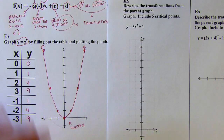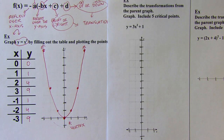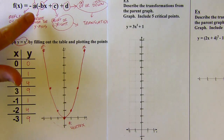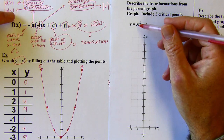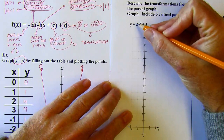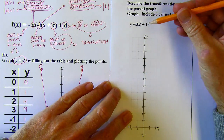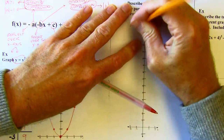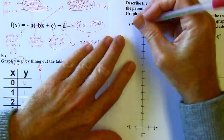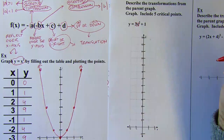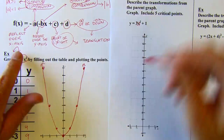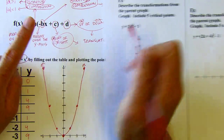The problem says to describe the transformations from the parent graph, then graph the function and include five critical points. Looking at 3x² + 1: if you drew in parentheses, you'd be squaring 3x — that's 9x squared, which is different. The three is on the outside of the parentheses around x, so it's not being squared. That means we have a coefficient in front, giving us a stretch or compression of some sort.